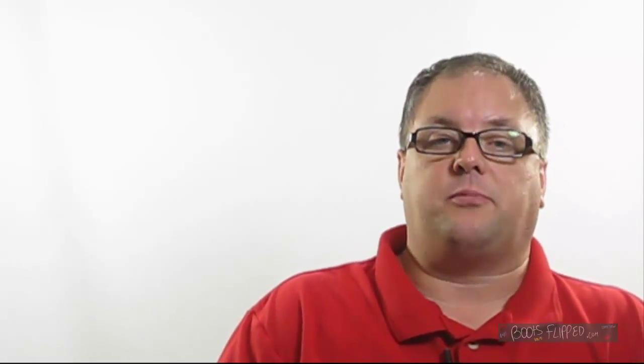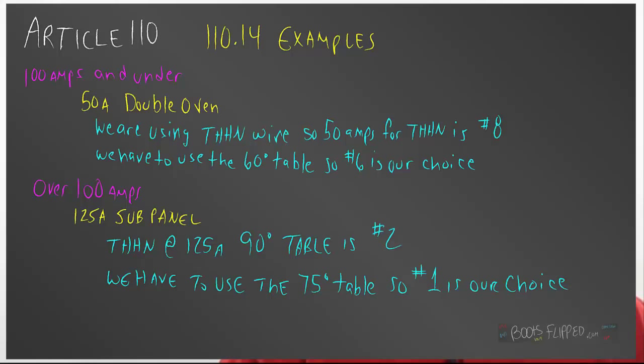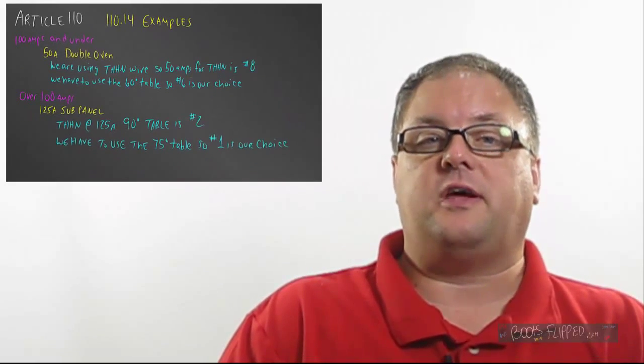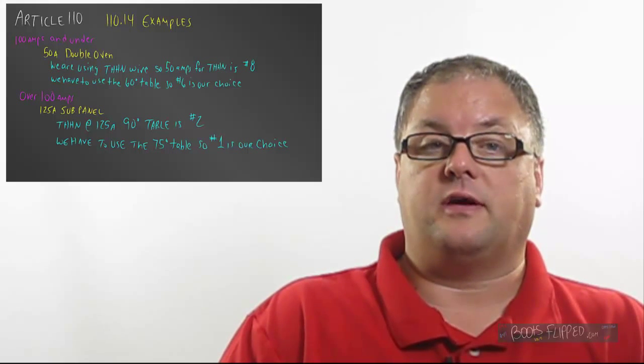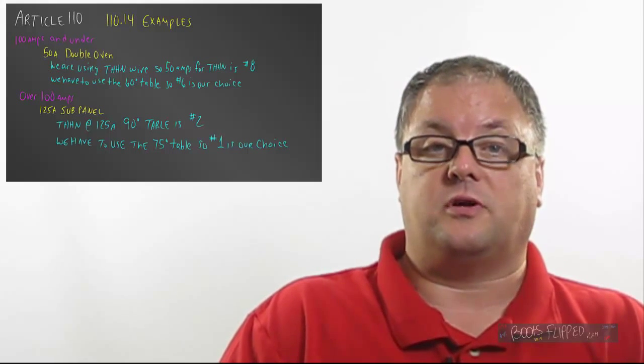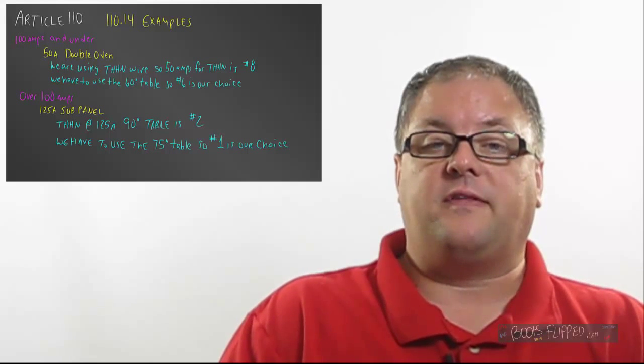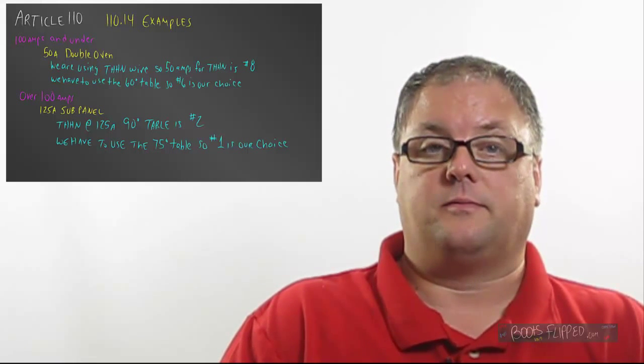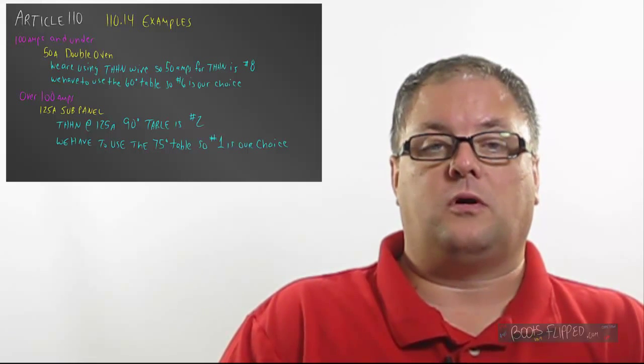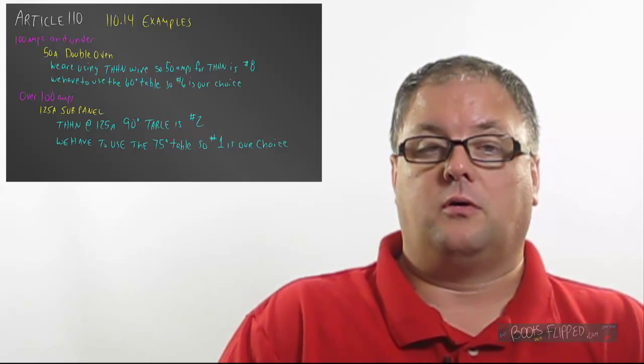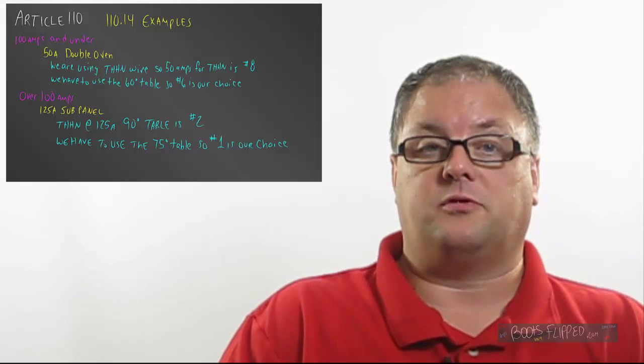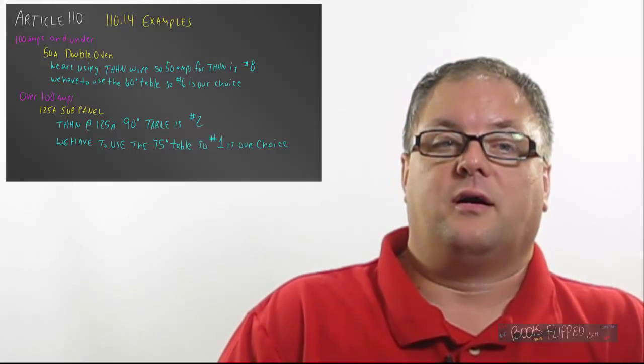So let's look at an example. If I had a double oven that I was putting in a house and it was 50 amps, or that was the size of the circuit that I had to run to it. So if I look at table 310.15B16, and I look in the THHN column because that's what I'm running, I'm going to find that I could use a number 8. Well, according to this code, though, I have to look at the 60-degree table, which is going to make me use a number 6.